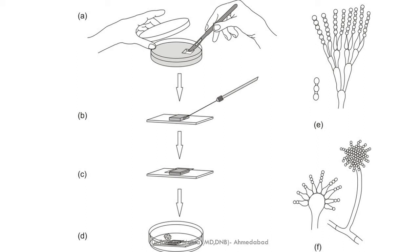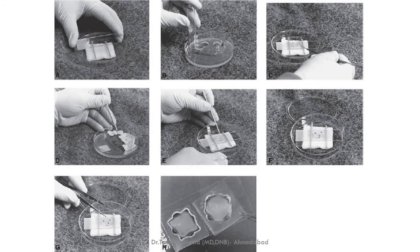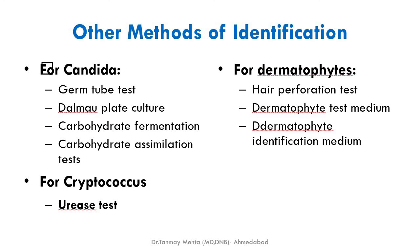The slide culture method: a small circular portion of medium is cut out, inoculated with the fungus, and a cover slip is placed on it. It is then placed on glass rods over moistened tissue in a closed chamber and incubated. As the fungus grows on the medium piece, it can be examined microscopically directly on the slide, preserving the natural arrangement of fungal structures.